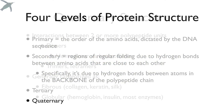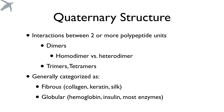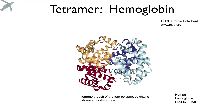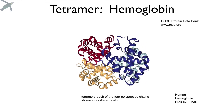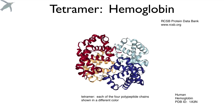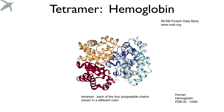Finally, quaternary structure. This happens when you have two or more polypeptide units — di meaning two, tri, tetramer. This refers to the number of units that have to be assembled for the final protein to work. We generally categorize them as fibrous or globular. Looking at hemoglobin again, each of the four subunits is shown in a different color, and you see how all four are assembled to make the final functional protein.